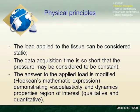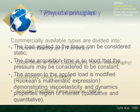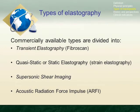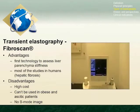Depending on the applied load and the answer obtained, we have different types of equipment. These fall into two main categories: strain and shear wave sonography. Fibroscan was the first technology to assess liver parenchyma stiffness. Most studies in humans were performed to assess hepatic fibrosis.